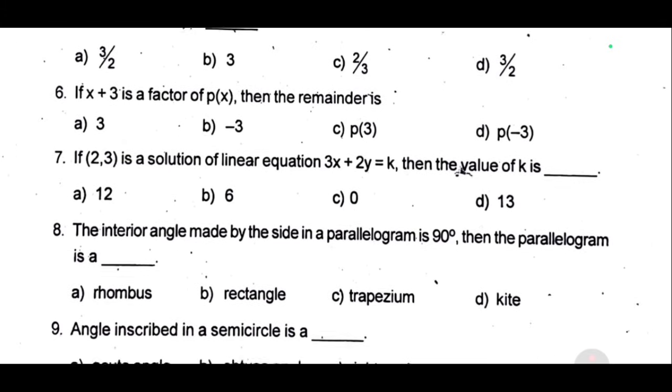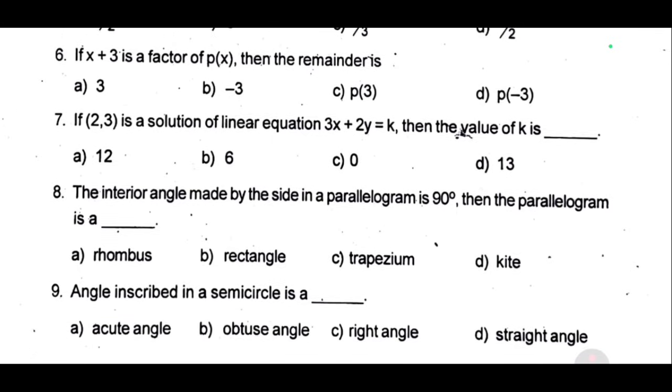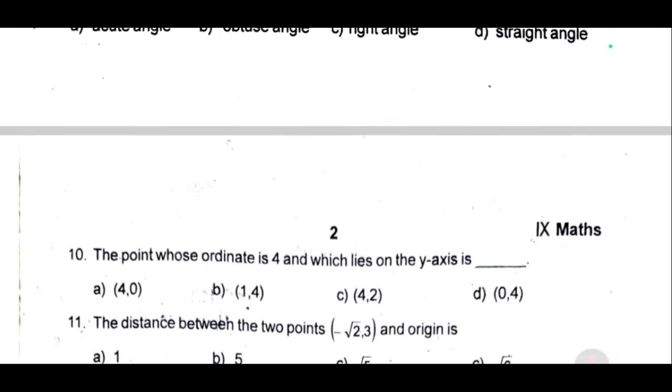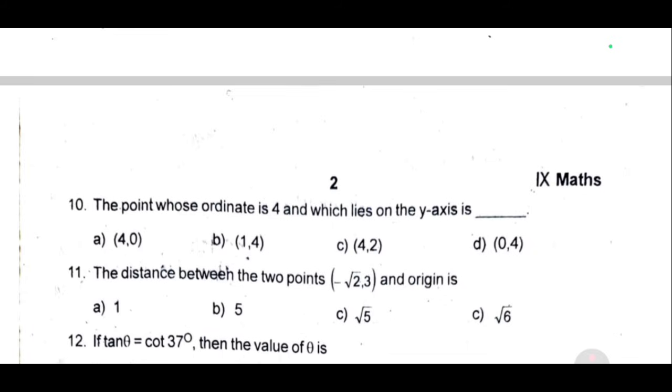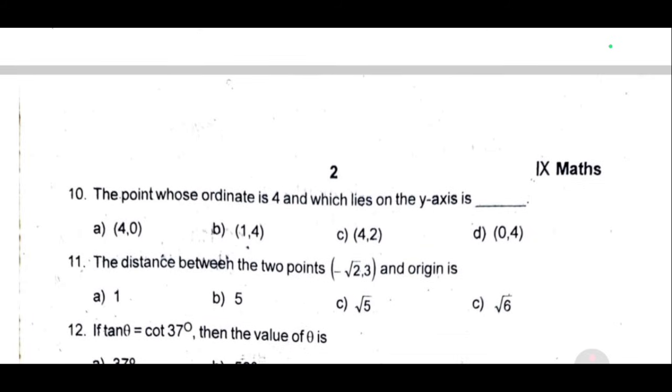Eighth one, the interior angle made by the side in parallelogram is 90 degree, then the parallelogram is a dash. Ninth one, angle inscribed in a semicircle is a dash. Tenth one, the point whose ordinate is 4 and which lies on the y axis is dash.